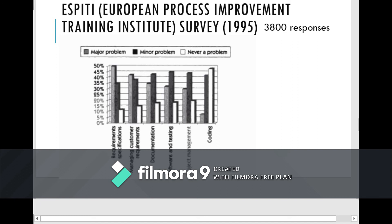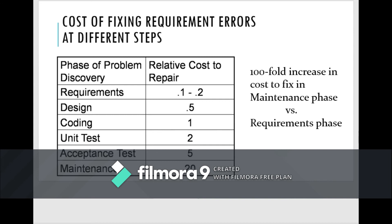The cost of fixing a requirement error at different phases is shown in a table. If the error is in the requirements phase, the cost is 0.1 to 0.2. If in the design phase, the cost is 0.5. In the coding phase it is 1, in unit testing it is 2, in the acceptance phase it is 5, and in the maintenance phase the cost rises to 20 — which is the biggest cost. So identifying errors early in requirements keeps costs lowest.